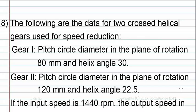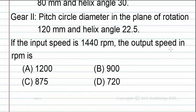Gear 2: Pitch circle diameter in the plane of rotation is 120 mm and helix angle is 22.5 degrees. If the input speed is 1440 rpm, the output speed in rpm is: